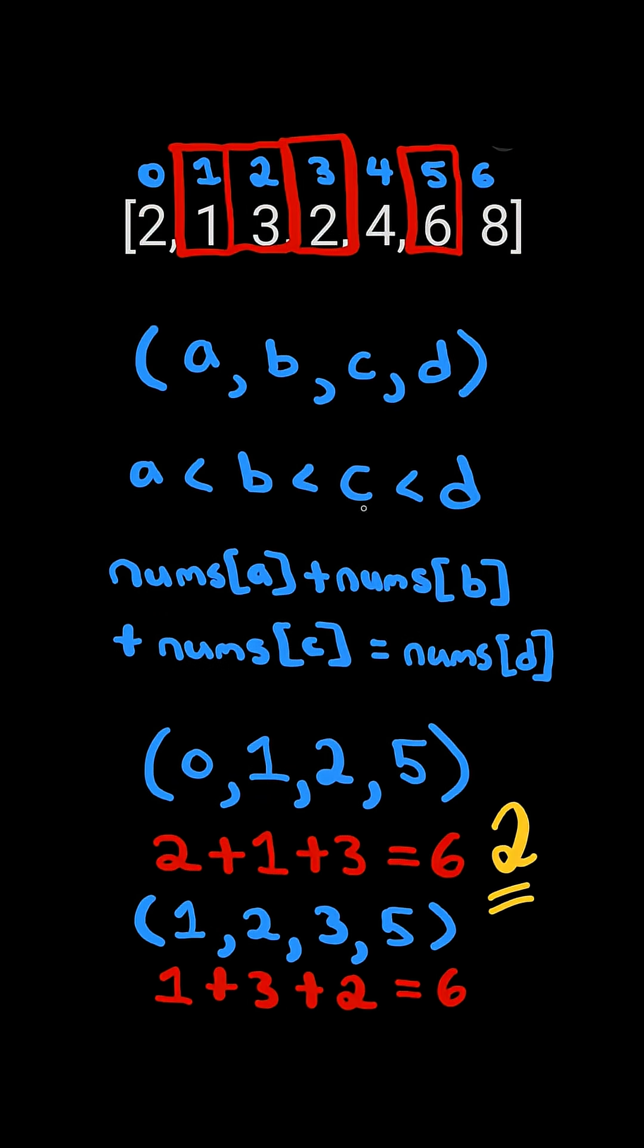Return the number of quadruplets that can be formed. We will solve this in O(n^4) time.